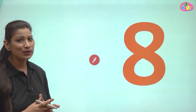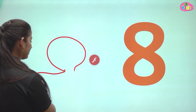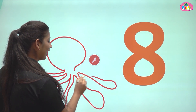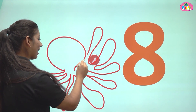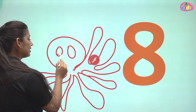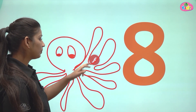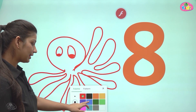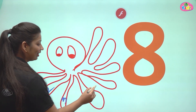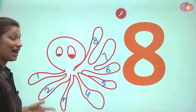Students, you know about octopus. An octopus has 8 legs. Let us count: one leg, two leg, three leg, four leg, five leg, six leg, seven leg, and eight leg. Octopus ke paas bhi 8 legs hoti hain. Octopus jo hoti hain, woh water mein rehti hain. Is octopus ke paas total 8 legs hain: 1, 2, 3, 4, 5, 6, 7 and 8. This octopus has 8 legs.